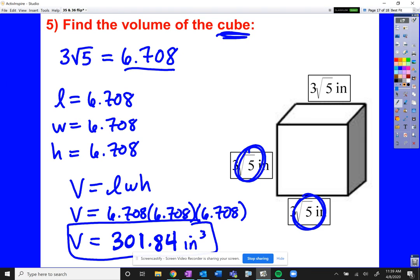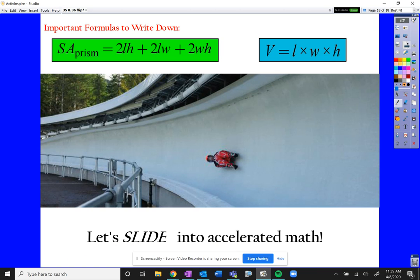Simple formula. As long as we can identify the length, the width, and the height, and with the cube, we know that they're all the same. So make sure you have these two formulas: surface area for a prism, volume of a rectangular prism. And let's just go rock our accelerated math. Great job, folks. We'll see you.